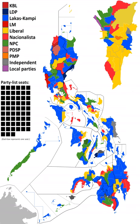In the Ilocos region, Ilocos Norte 1st district: incumbent Roque Ablan Jr. is ineligible for re-election after serving three consecutive terms. His son Christian Ablan is running against former representative Rodolfo Fariñas. Fariñas is running under the Nationalista Party and is backed by the Marcos clan. Fariñas won with just over 50% of the vote.